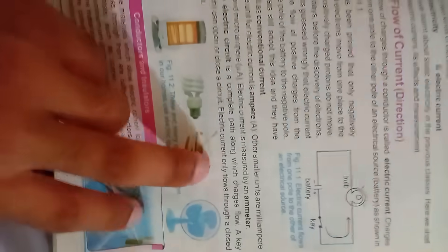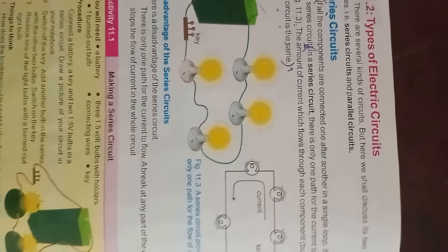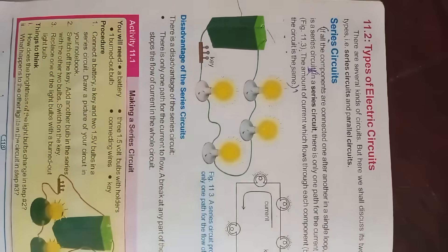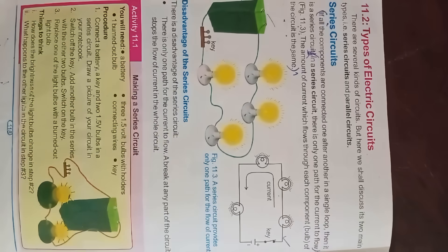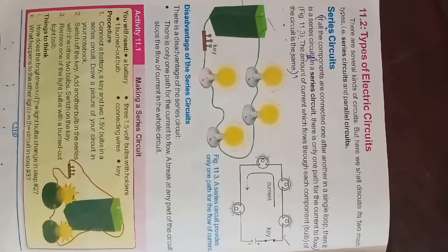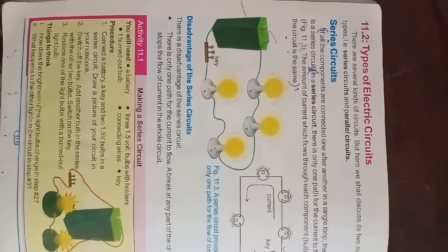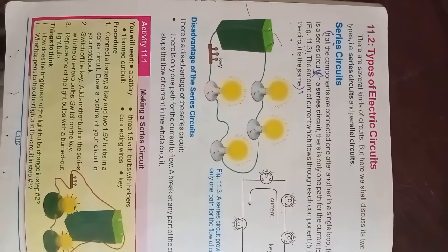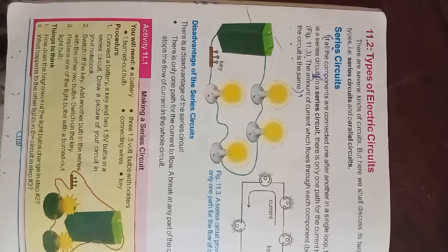Rubber, glass, sand, plastic, and wood are insulators. There are several kinds of circuits, but here we shall discuss two main types: series circuits and parallel circuits.